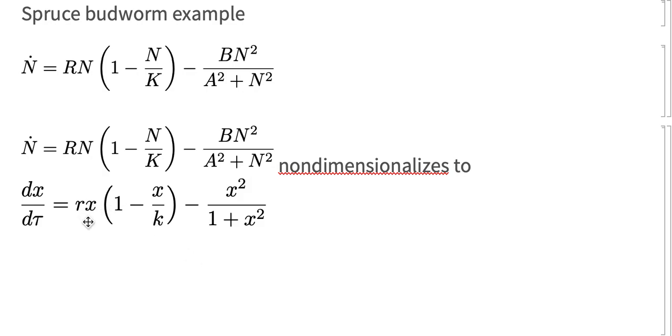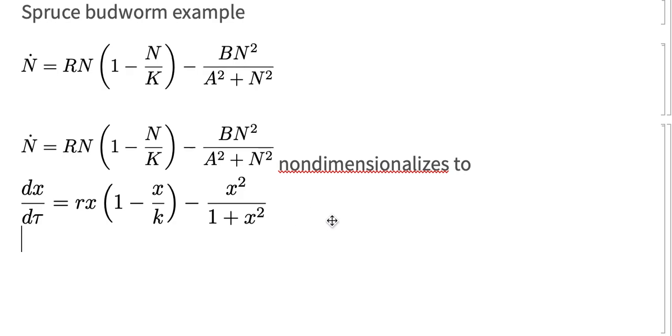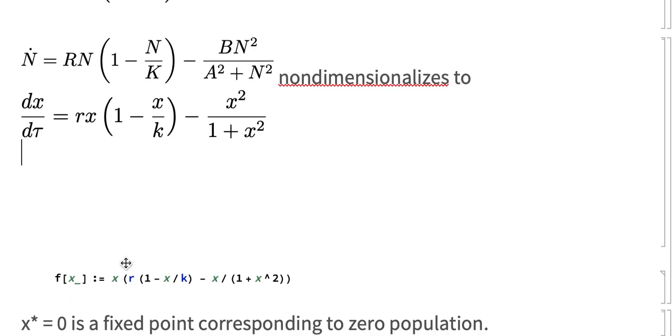Now taking a look at these equations, you might notice that X factors out of both of them. So if we start thinking about fixed points of this equation, just to think about what the expected states of the system would be, we can see that X equals zero is going to be a fixed point. So I've factored it out right down here and X equals zero is a fixed point that corresponds to zero population.